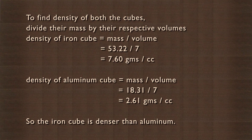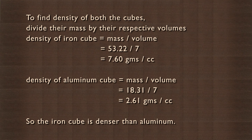Now in order to find the density of both cubes, divide their mass by their respective volumes. The density of the iron cube is 53.22 divided by 7, which gives 7.60 grams per cubic centimetre. And the density of the aluminum cube is 18.31 divided by 7, which is 2.61 grams per cubic centimetre. So the iron cube is denser than aluminum.